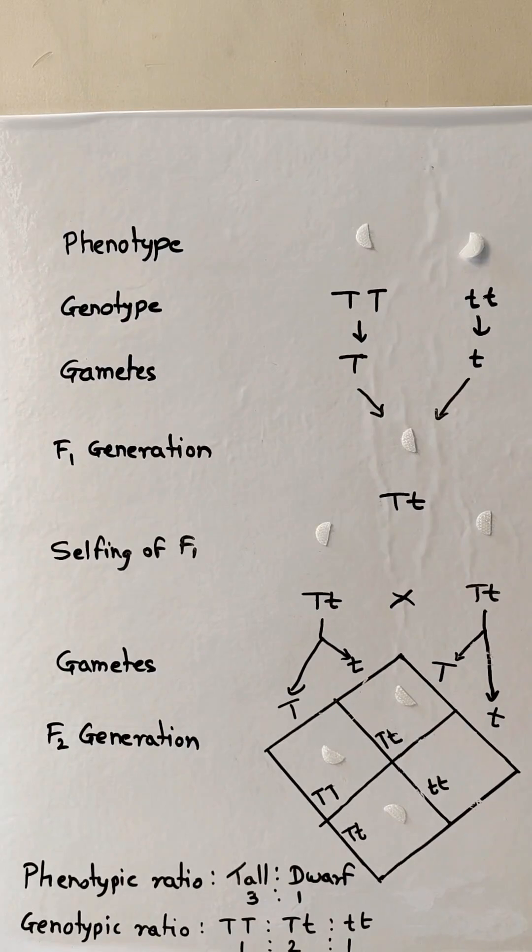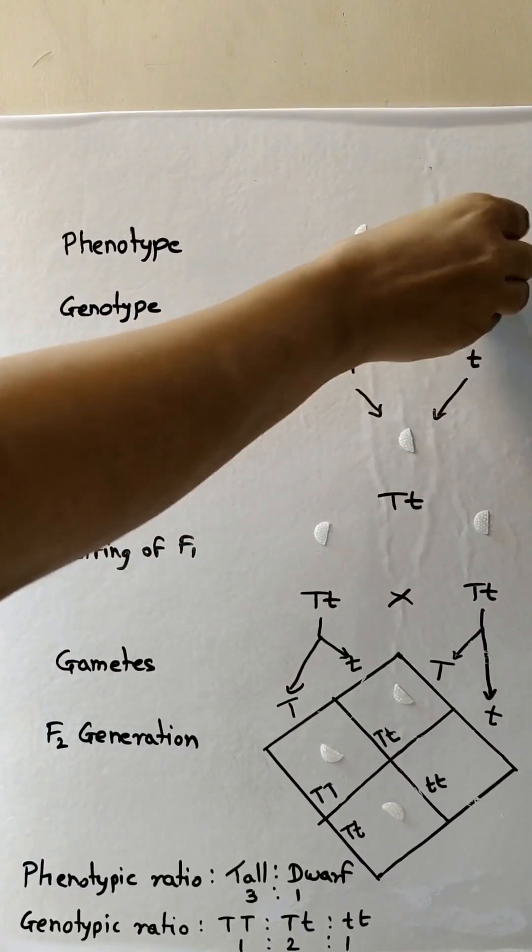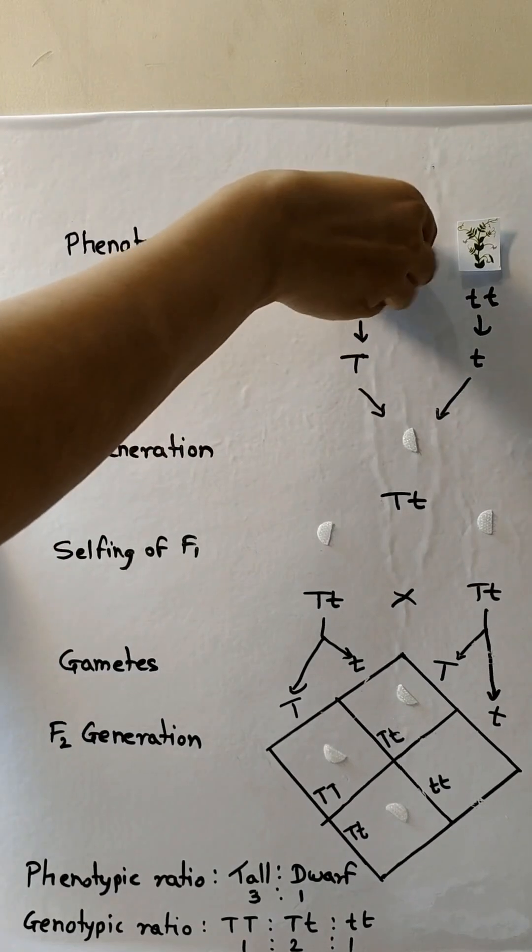Here we are going to take two plants: a tall female plant and a dwarf male plant. The pollen grains from the dwarf plant we are going to dust on the tall flower plants. That is cross-pollination, artificial cross-pollination.